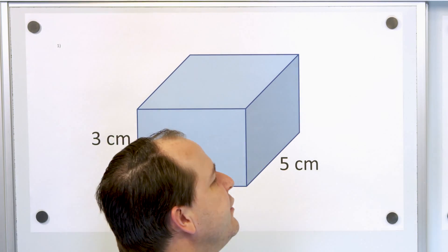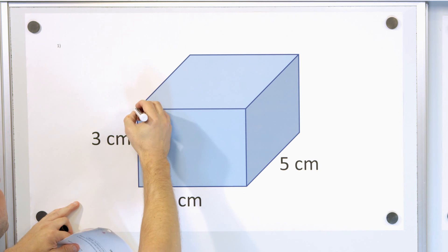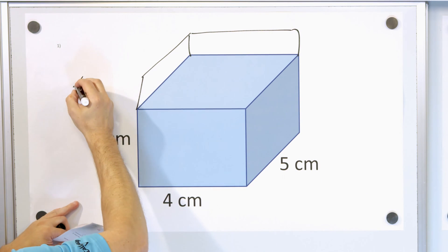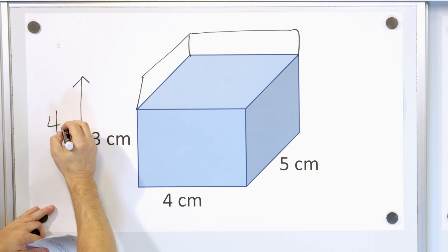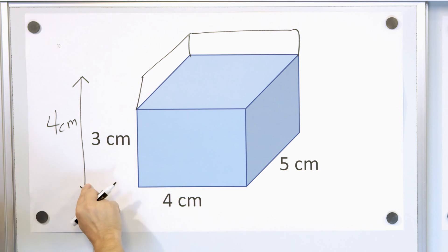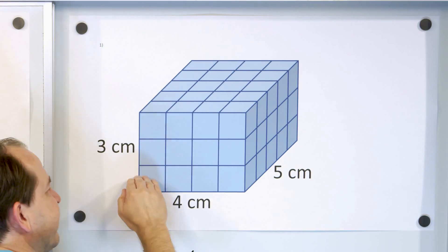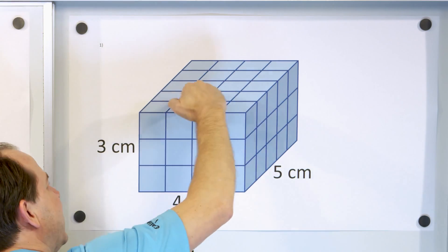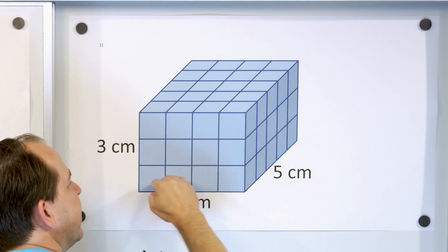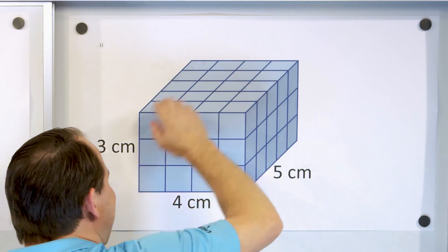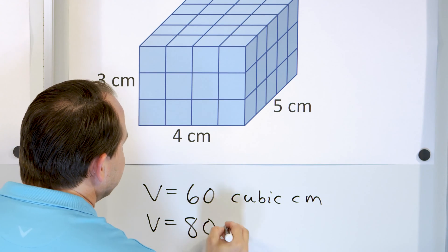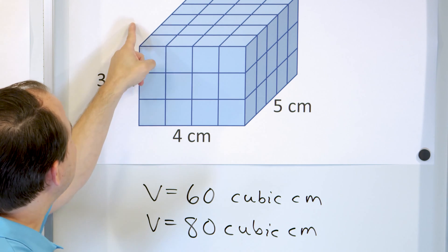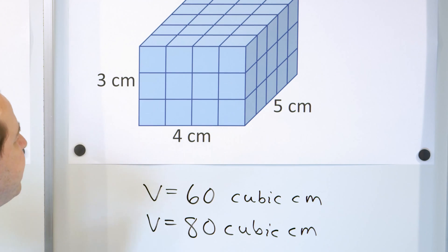But let's, for fun, change it a little bit. Instead of three centimeters tall, let's make it four centimeters tall — adding another layer. Everything else stays the same: four wide, five deep, but now four centimeters tall. There's still 20 cubic centimeters in the bottom, then another 20, another 20, and now one more layer of 20. So altogether: 20, 40, 60, 80. The volume would be 80 cubic centimeters if you add that extra layer on top.